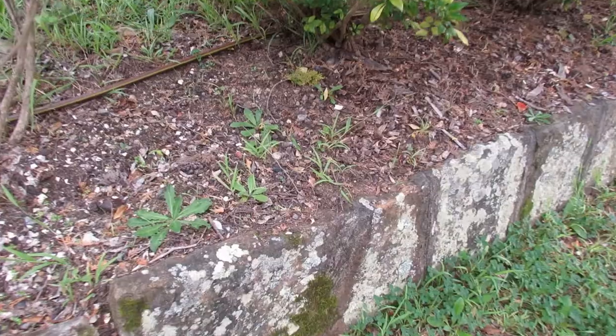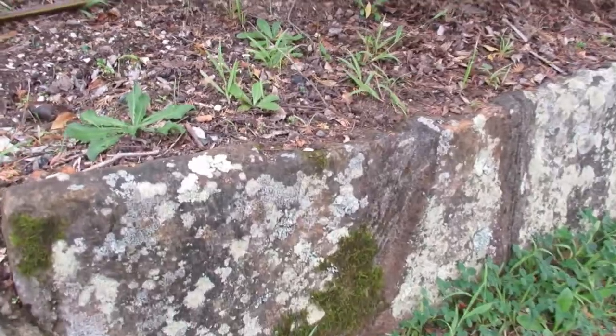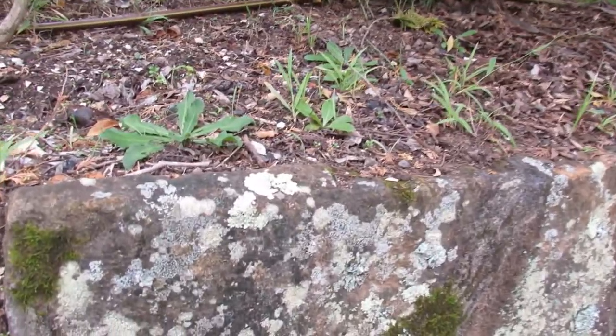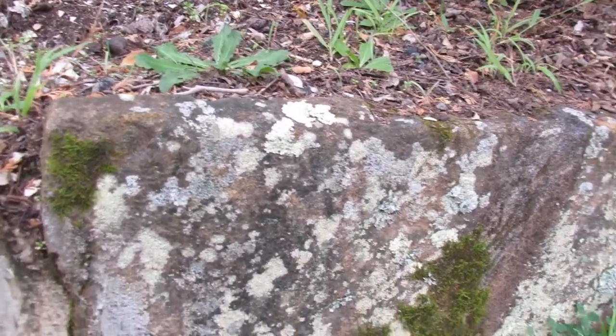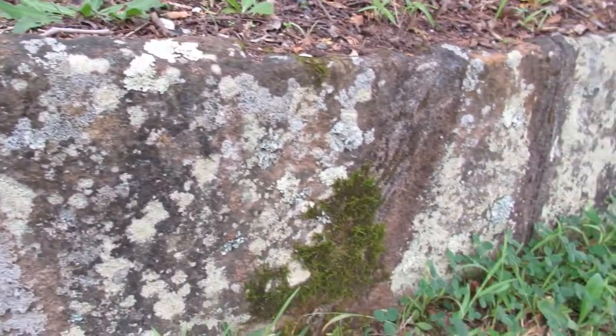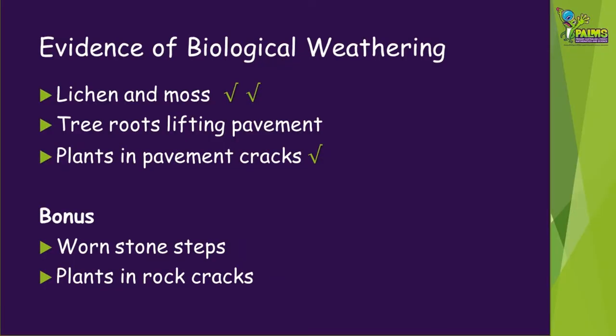On 1st Street, I noticed this stone wall with lichen and moss growing on it. Does it look like there's more than one type of lichen?